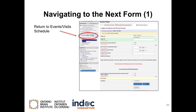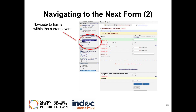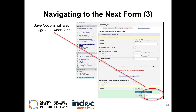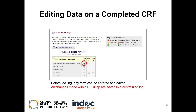Once a form is completed, you may navigate to the next form using a few options. The first option is to go back to the visit schedule grid and select the next form. You may also navigate to forms within the current event using the side toolbar. Save options will also allow you to navigate between forms. If you desire to edit data on a completed eCRF, you may click on the green bubble to edit responses, as long as the form has not been locked. Remember, all changes made within REDCap will be saved into a centralized log.